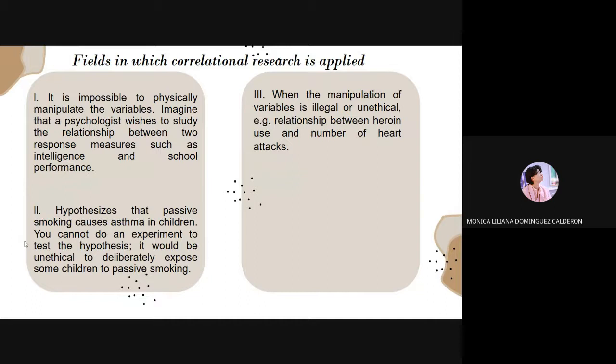And the last one is when the manipulation of variable is illegal or unethical. For example, the relationship between heroin use and number of heart attacks. It is unethical to administer different doses of heroin to a group of people and see whether or not a heart attack occurs under the most controlling condition possible. But we can select people from the population, heroin addicts, and keep track of them for a while.